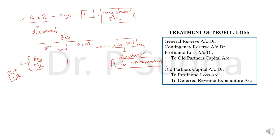Now let us see what is the treatment for profit or loss and reserves. In the balance sheet, the profit or loss and reserves will go to the old partners in the old profit sharing ratio. Any reserve given in the question — general reserve, contingency reserve, or any other reserve — should be debited. Along with that, if the profit and loss account has a credit balance, it will also be debited and transferred to the old partners' capital account in the old profit sharing ratio.